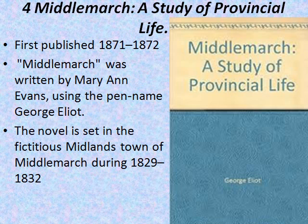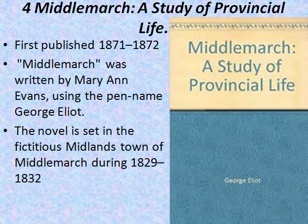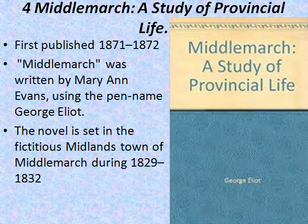The next one is Middlemarch, with the subtitle A Study of Provincial Life. It was first published in eight installments in 1871–1872. Middlemarch was written by Mary Ann Evans using the pen name George Eliot. As the name implies, the novel is about the lives of a number of people who live in the provincial town of Middlemarch. It is a very complex novel comprising many characters and themes, set in the fictitious Midlands town during 1829–32, following several distinct intersecting stories with a large cast of characters.